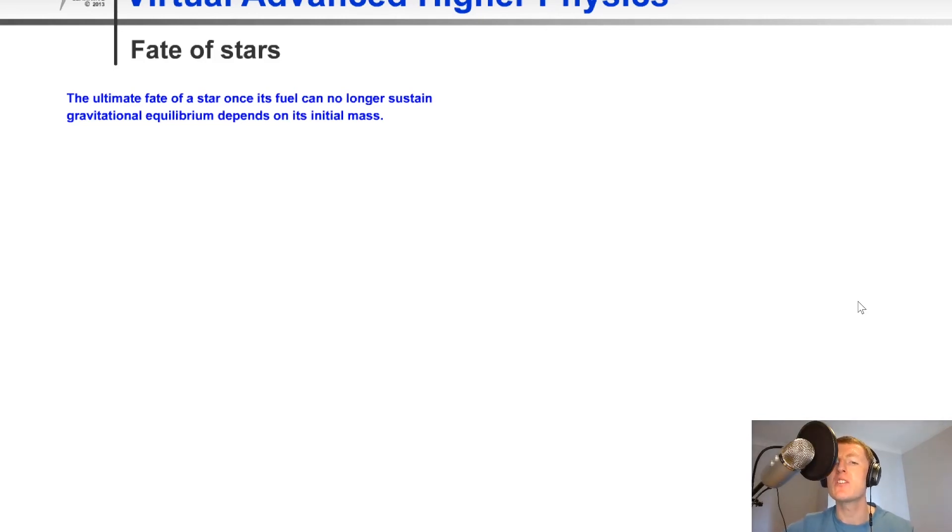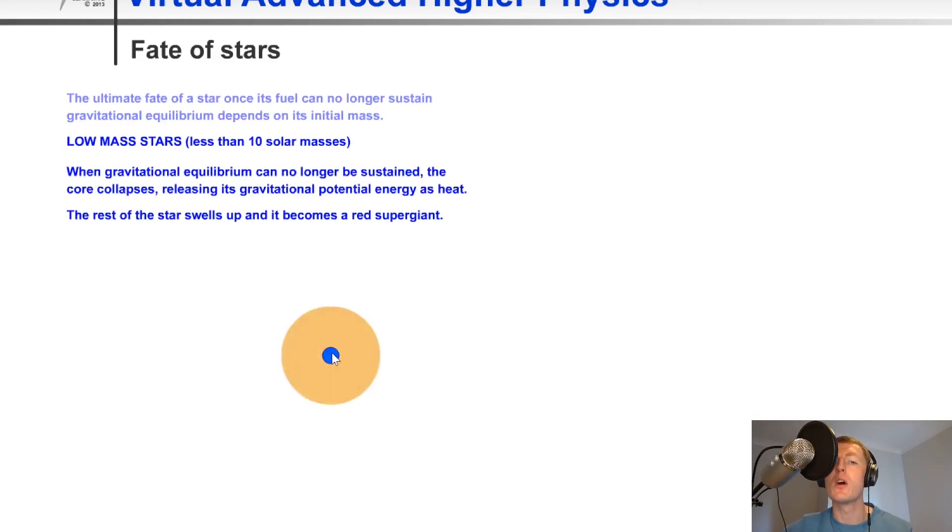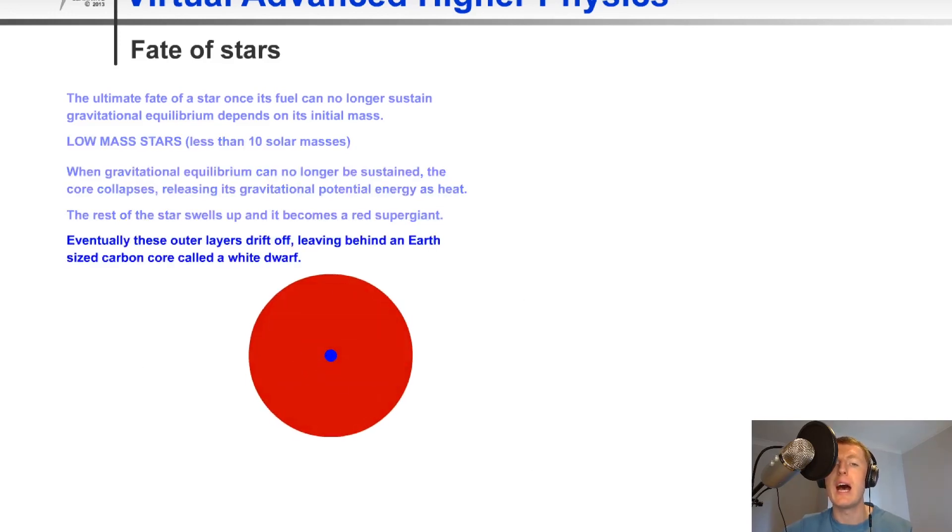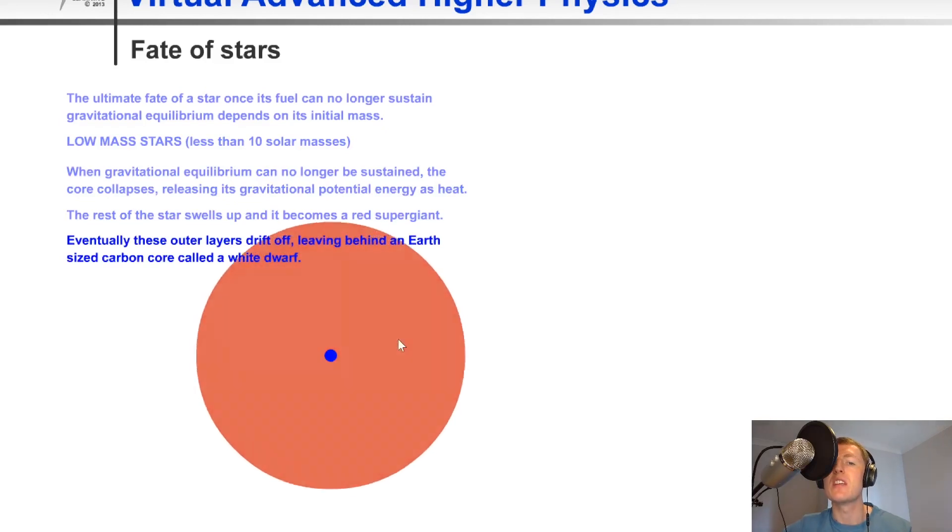Just to help you visualize the eventual fate of low mass, high mass, and very high mass stars, we're going to look at these animations here. First of all, for low mass stars, this is what happens. We have our core reducing and then forming a red supergiant or a red giant. So we have our collapsed core, and eventually these layers drift off, and it leaves behind a white dwarf.